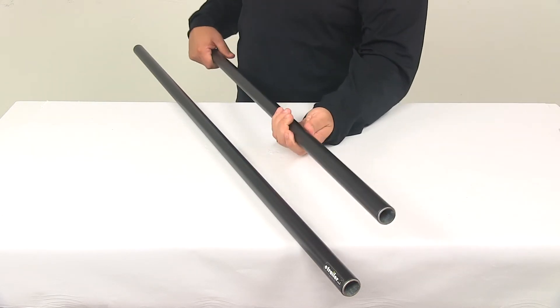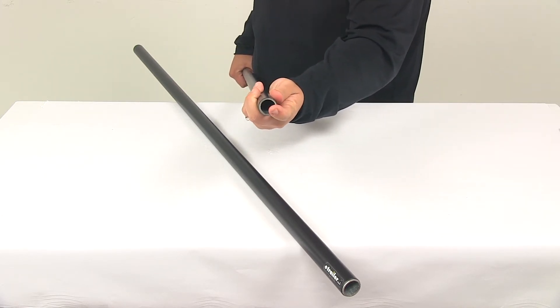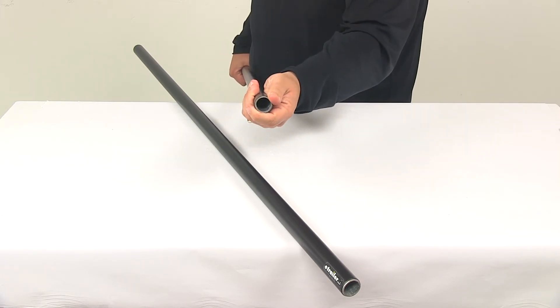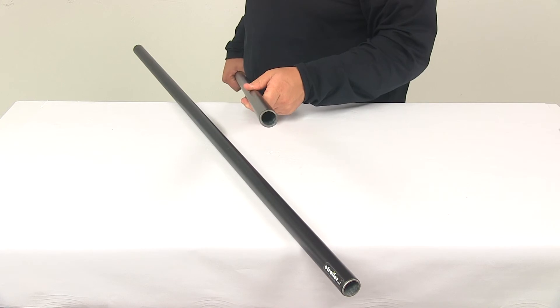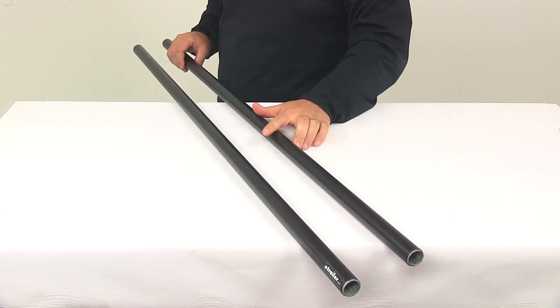They're covered with a lifetime warranty and please note that the crossbars do not include end caps. End caps are included with the rack towers or are sold separately on our website at eTrailer.com with part number Y8007026.